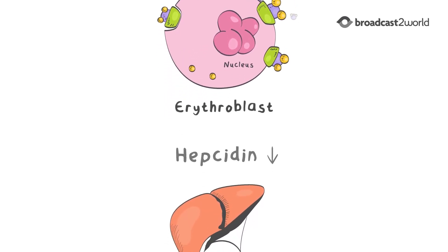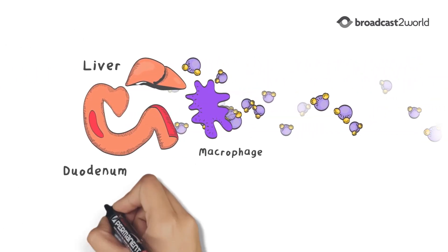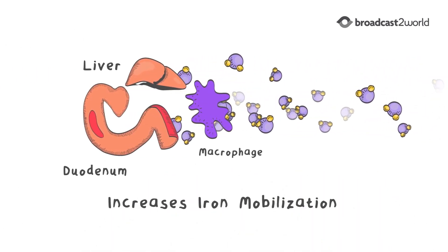In addition, activation of the HIF pathway also leads to a decrease in production of hepcidin from the liver, which increases mobilization of iron from iron stores.